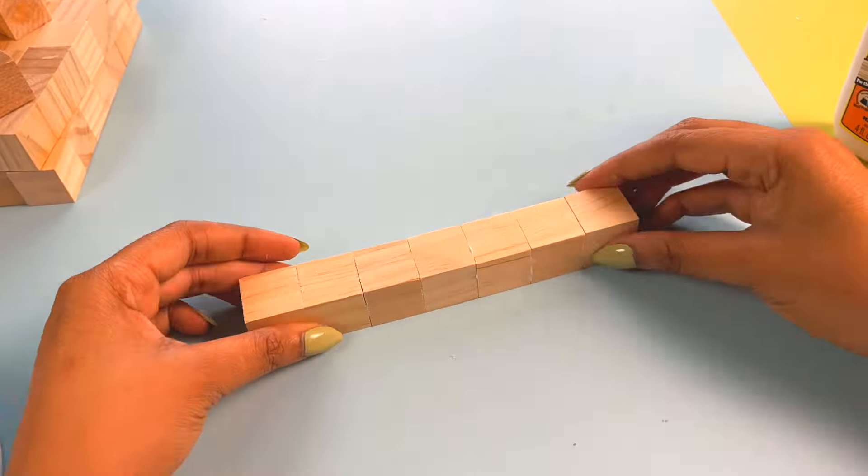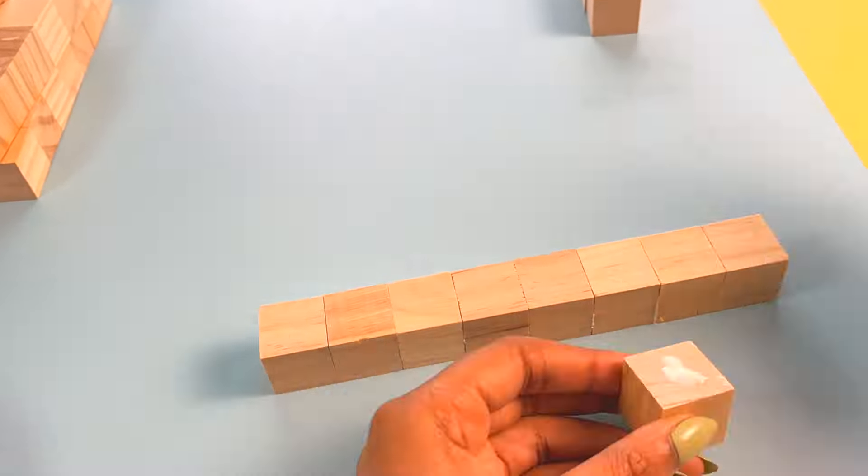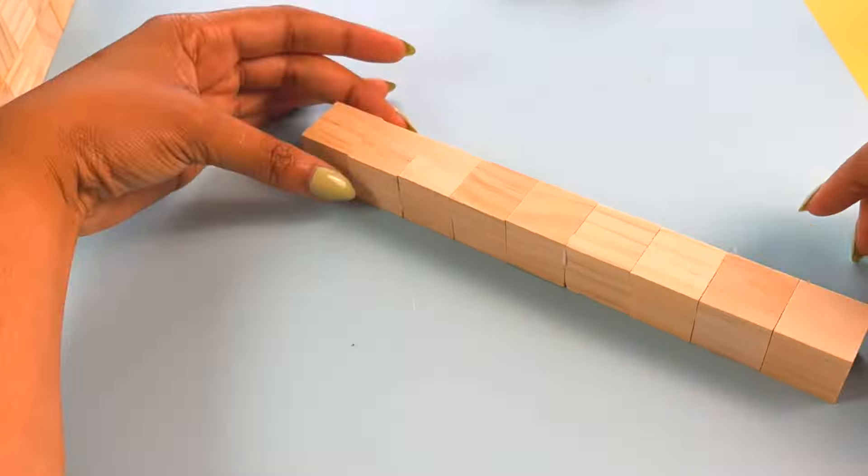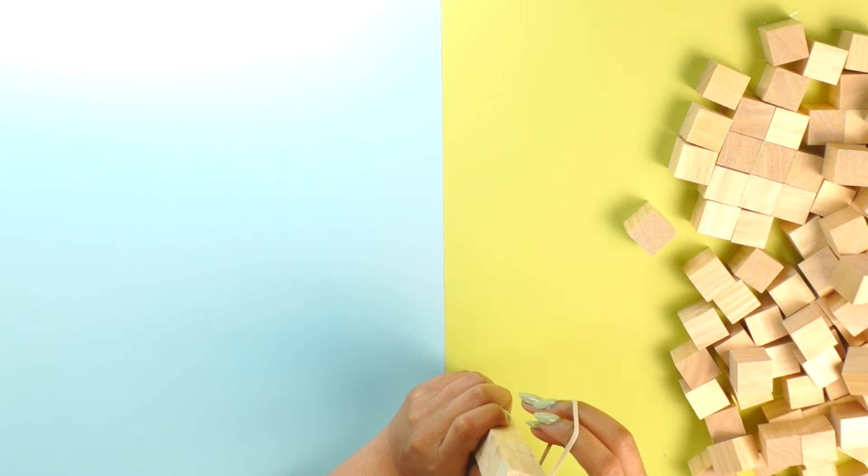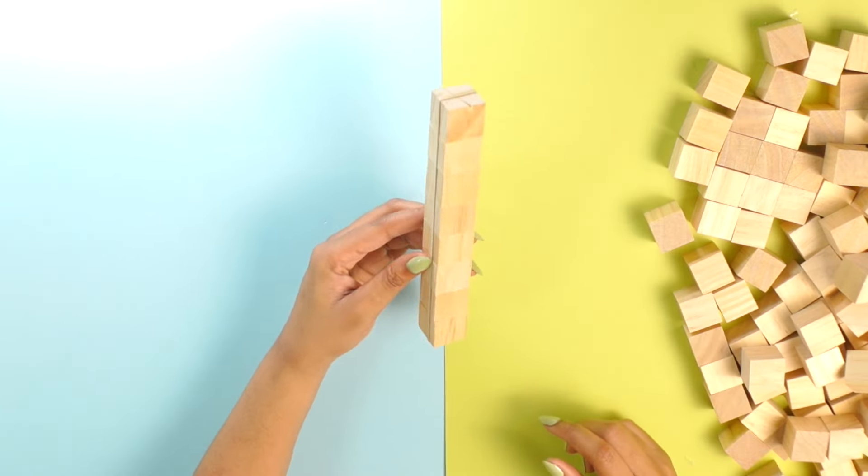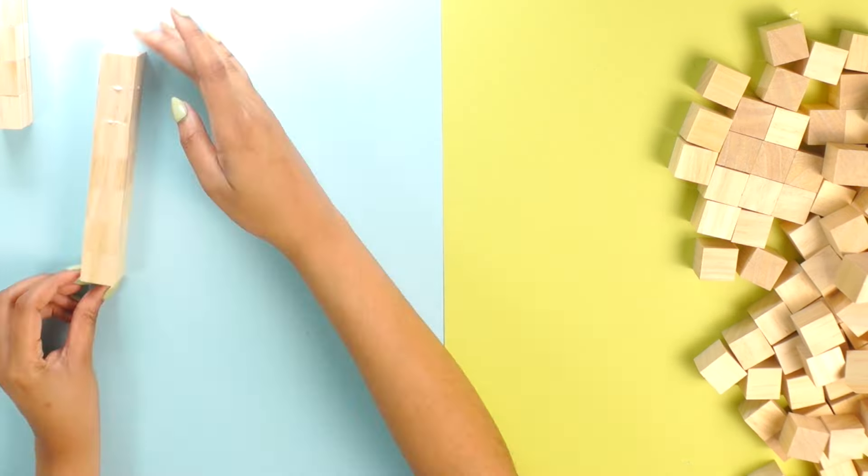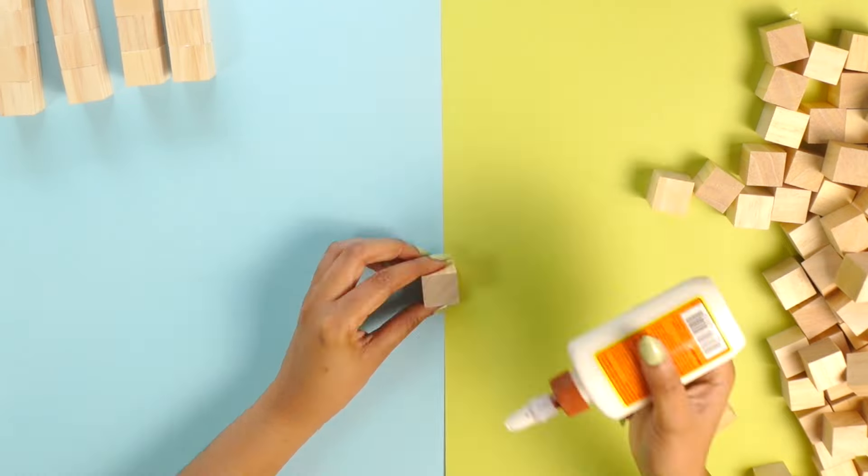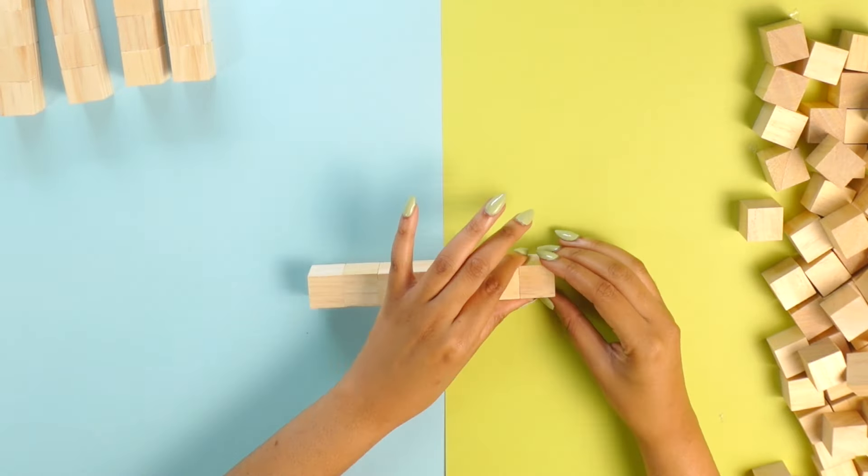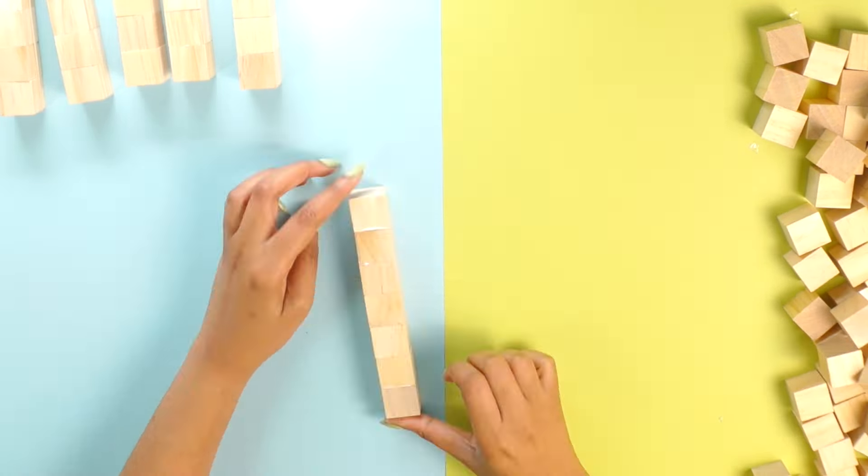This by far was the most time-consuming part. Once I've got them all glued together, I'm going to take a rubber band and wrap it around the whole thing to keep it in place. I need seven rows of seven and nine rows of nine.